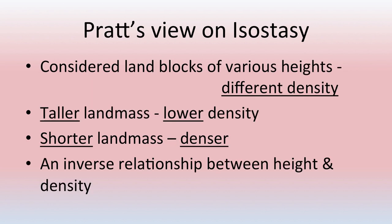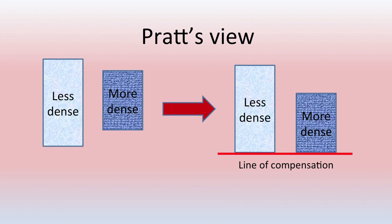Pratt was another geologist who explained isostasy. According to Pratt, he considered land blocks of varying heights with different density — unlike Airy who assumed same density. Taller land masses will have lower density while shorter land masses will have greater density, so there is an inverse relationship between height and density. Pratt used mercury for his experiment — when columns of varying density were immersed in mercury, both floated at the same level along the line of compensation.